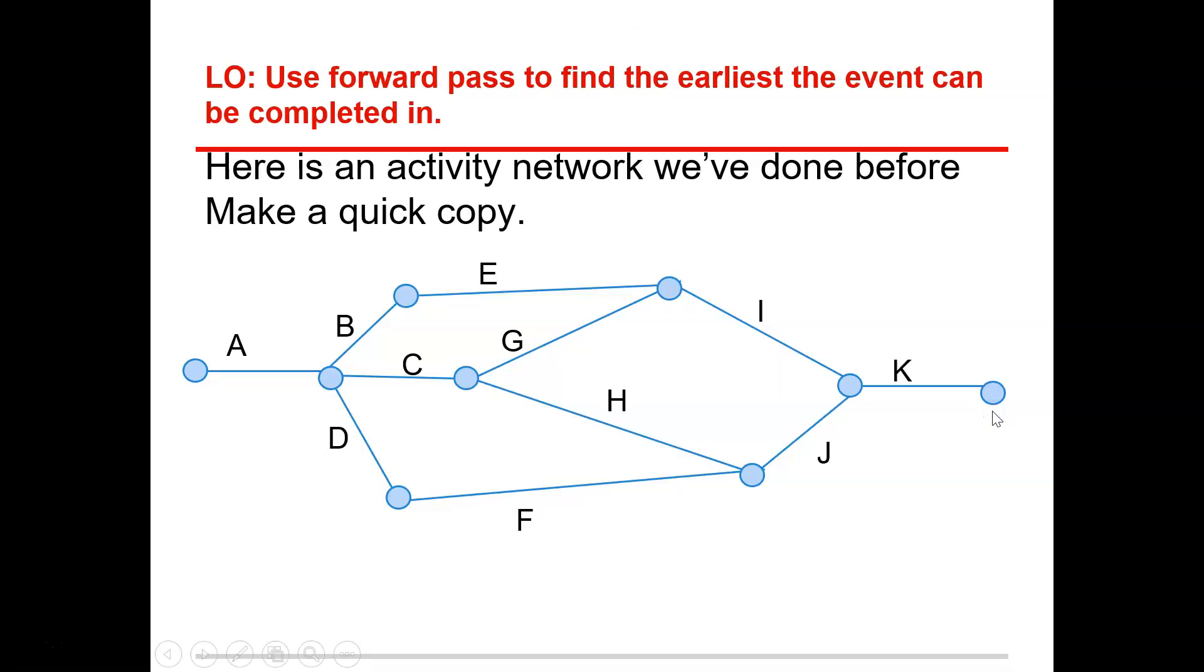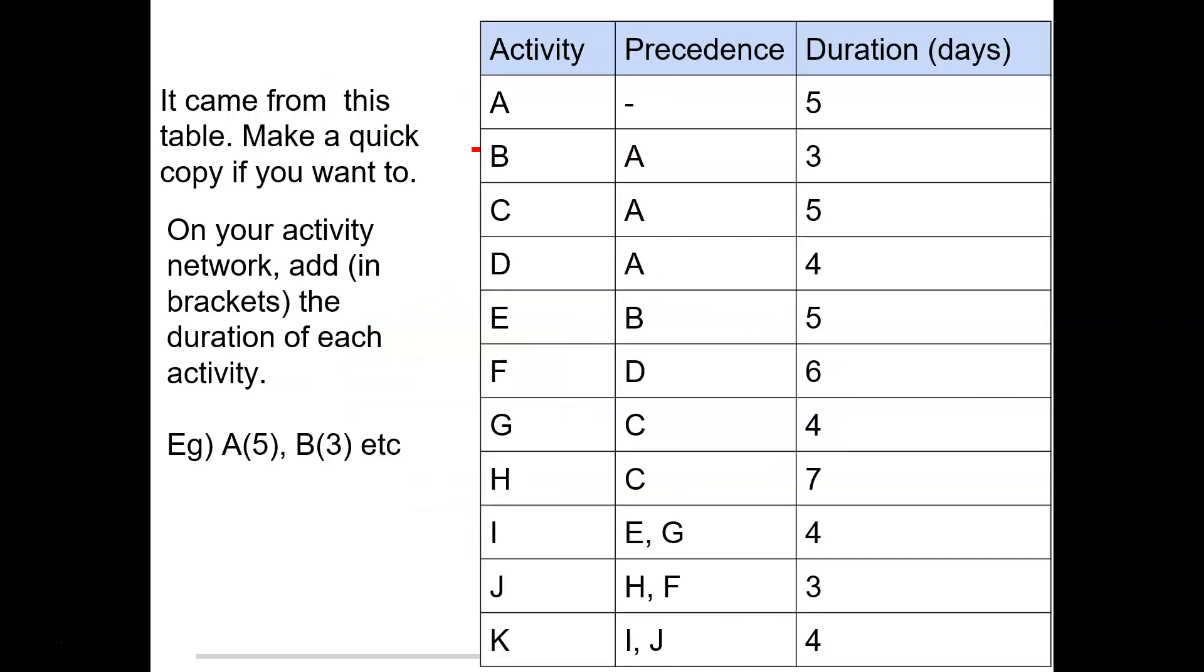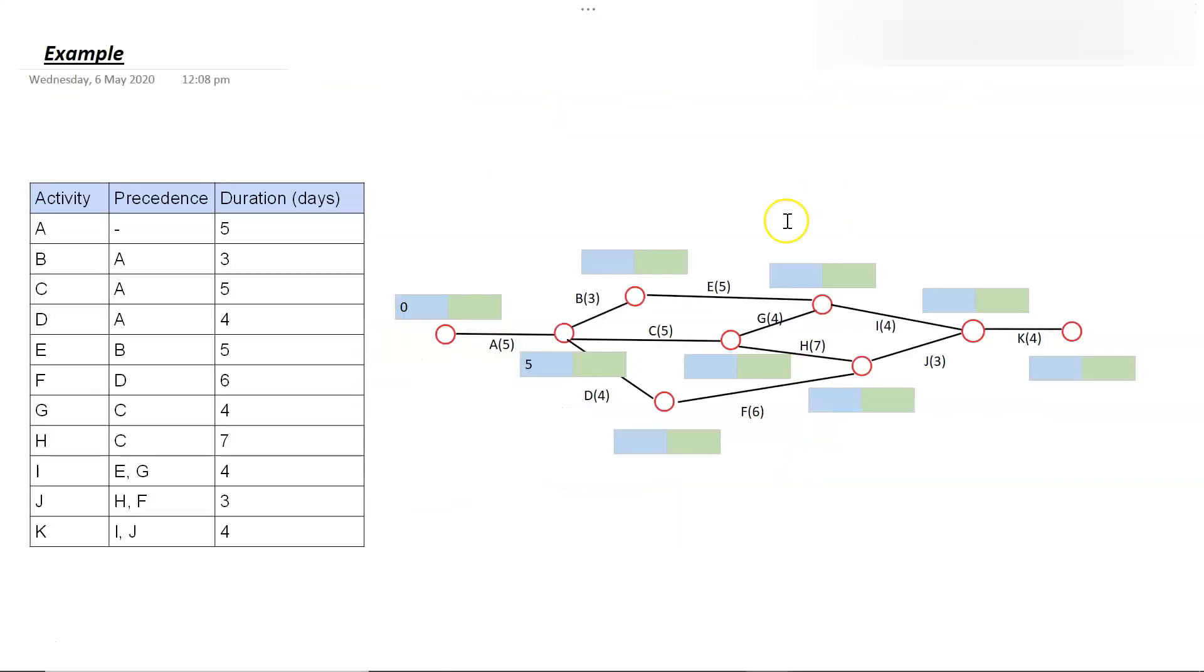Okay, so this is an activity network where I've done before. You may have copied it down from the last video or the last lesson, and you've probably already added the duration on the side here. And so this is just the activity network that I had from the other day, and I've just added the boxes on top. So I've got two boxes, one the blue being for the forward pass and the green being for the backwards pass.